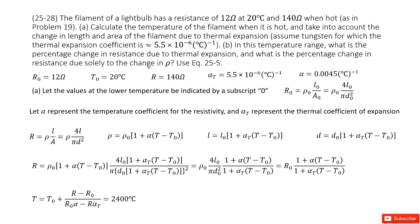Chapter 25 is electrical current and resistance. We have a resistor. At its initial temperature of 27 degrees, the resistance R0 is 12 ohms. The final temperature we don't know — we need to find it. The resistance becomes 140 ohms.